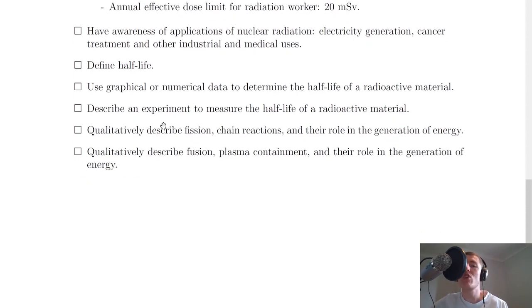Next it says to describe an experiment to measure the half-life of a radioactive material. You need to be able to describe the brief steps, a few bullet points of how you would measure the half-life of a radioactive material. Bearing in mind you want to produce a graph from it and that's how you would work out the half-life. You would have a graph of activity versus time from your experiment which you could then use the graphical method on to work out the half-life of the material.